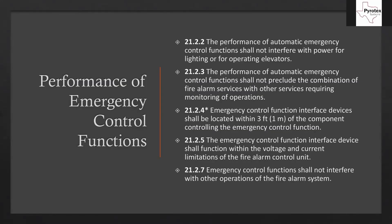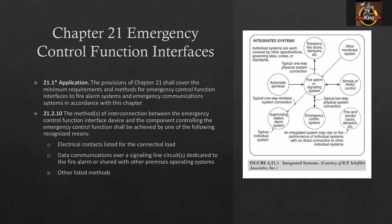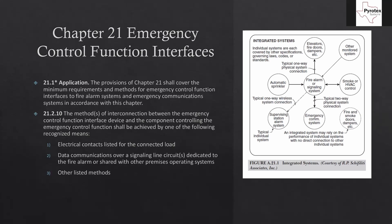Question from student: would sending an override signal to shut off speakers be an example of one of those interconnection methods? Yes, that would be the electrical contacts method — we close or open a switch that the intercom is looking at for an input, and whenever we close or open that switch, they turn their signal off regardless of what's going on, because the fire alarm always has to override whatever other message is being played. Chapter 21 covers any way that the fire alarm connects to any other system in the building.